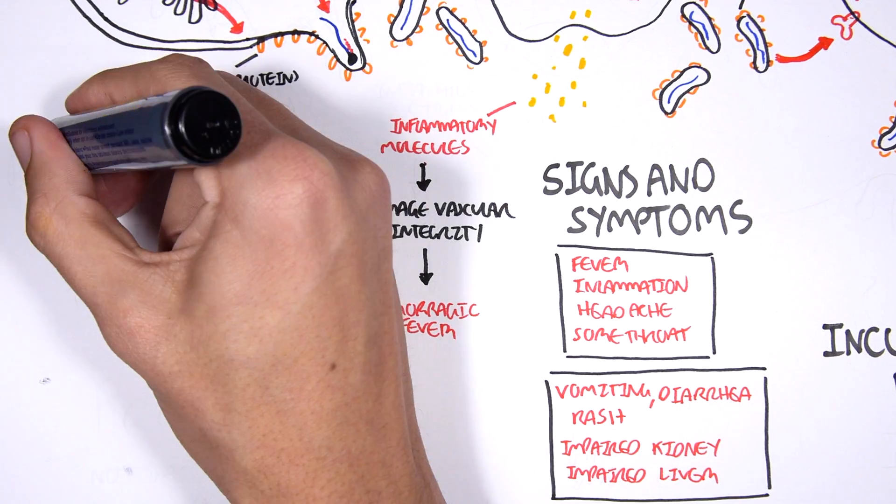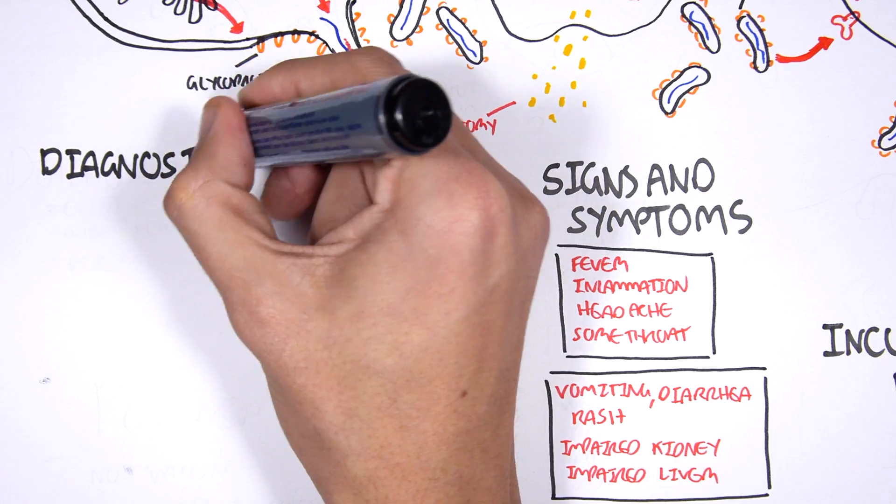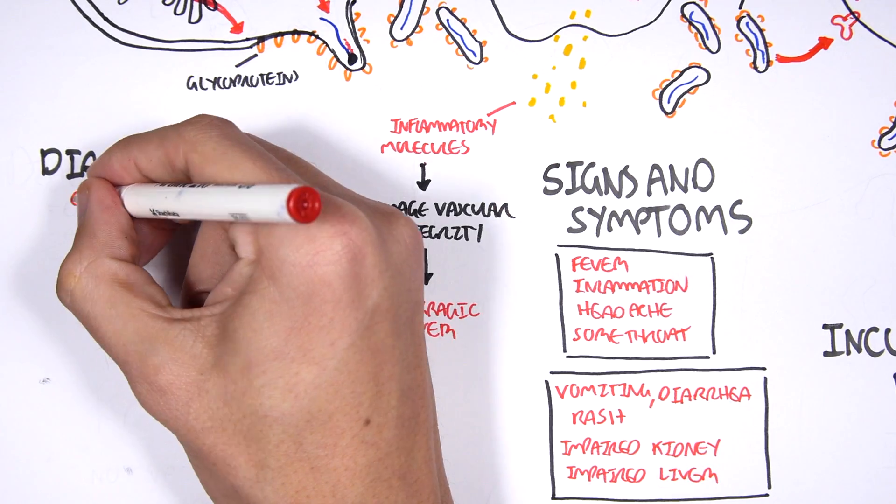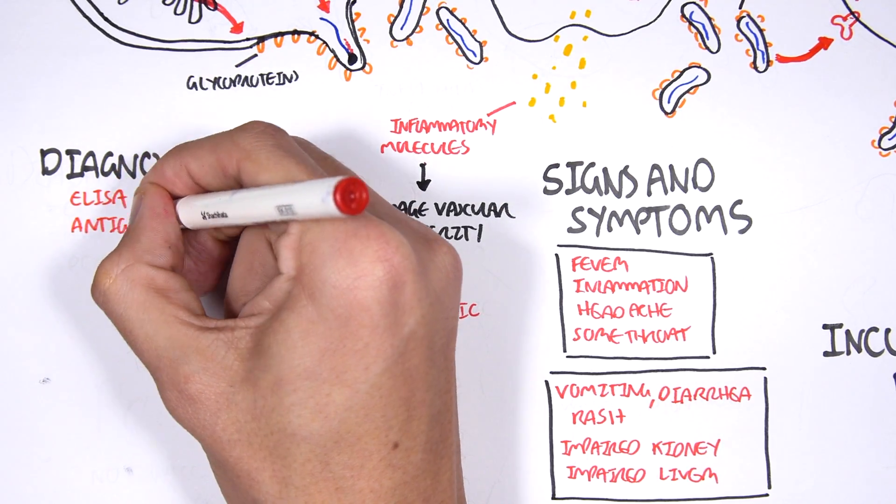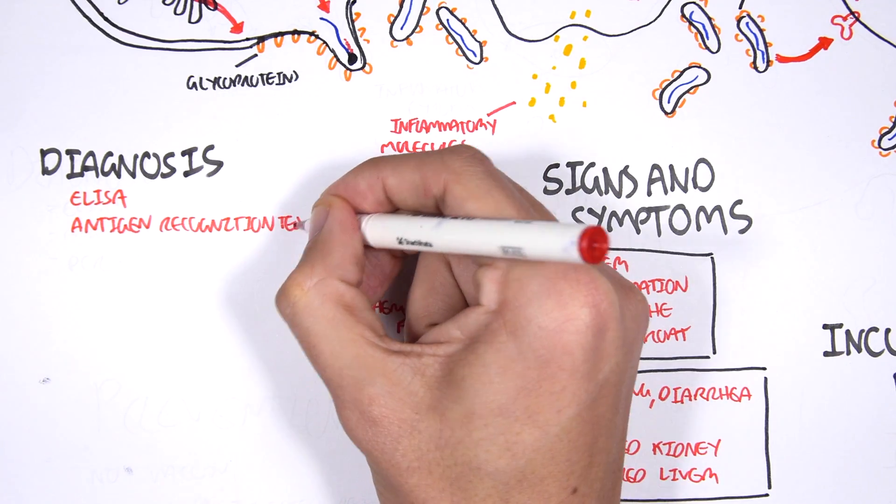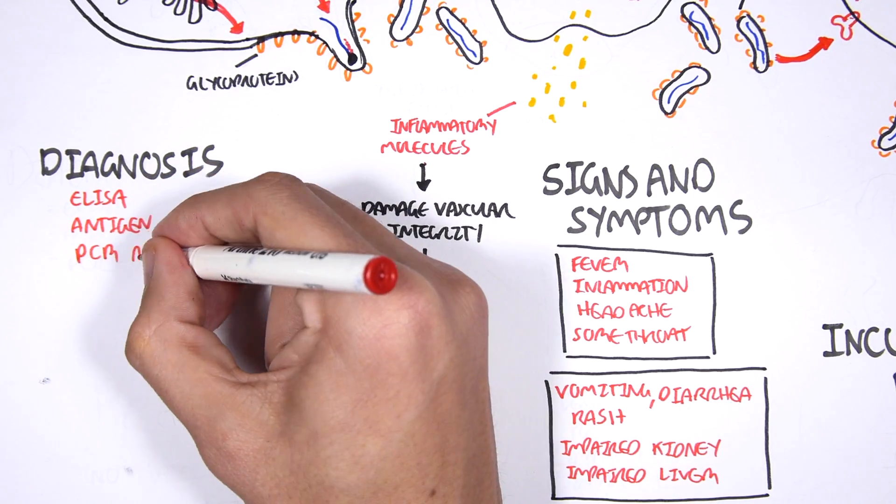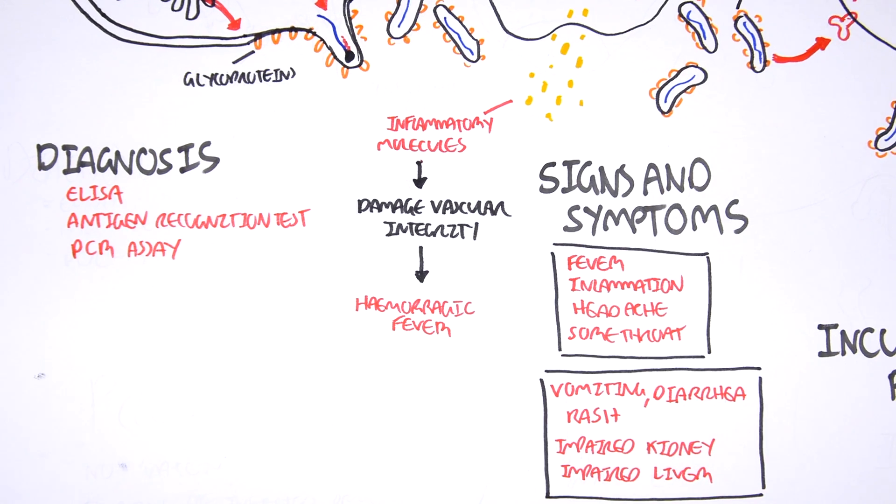When diagnosing Ebola virus disease, it's important to rule out other similar diseases including malaria. To diagnose Ebola virus disease, you can use methods such as ELISA, antigen recognition test, as well as PCR assay.